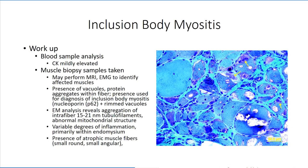Tissue analysis will demonstrate vacuoles and aggregates of proteins within the muscle fibers, which can confirm the diagnosis of inclusion body myositis. Analysis of these protein aggregates reveals nucleoporin in about 44% of identified cases, and rimmed vacuoles in combination with P62 aggregates in 93% of cases. Electron microscopy may also demonstrate the presence of tubulofilament aggregates and abnormal mitochondria. Tissue samples will also demonstrate variable amounts of inflammation surrounding individual fibers, primarily composed of T cells and macrophages, along with a collection of small atrophic muscle fibers.